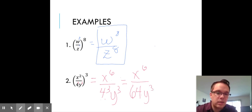And y^3 doesn't change. So x^6 over 64y^3, none of our bases are the same, and there's no more simplifying we can do. So that is our solution.